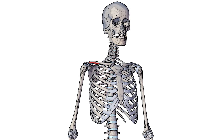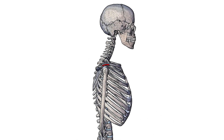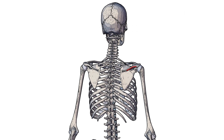So let's go over the origin next. We can see the origin of the anterior head here on the lateral third of the clavicle. You can see the origin of the lateral head here on the acromion. And we can see the origin of the posterior head here on the spine of the scapula.